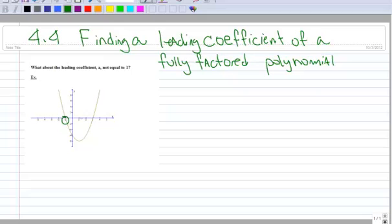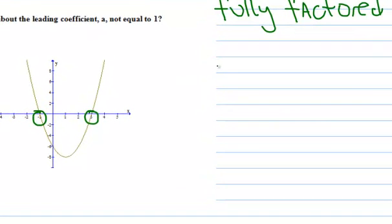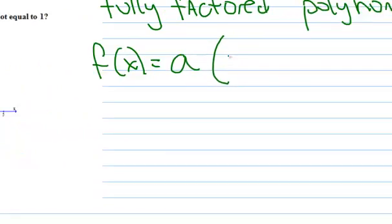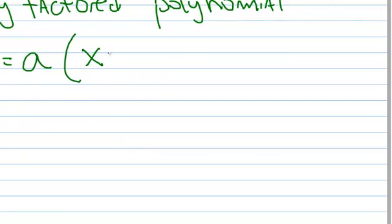So let's first start by making our fully factored form. And I'm going to let my leading coefficient be a, because I don't know what it is. So I have a, let's see, this is negative two over here, and this one is three, so I have x minus the zero, which is going to be x plus two, and then I have x minus the zero, which is going to be x minus three.